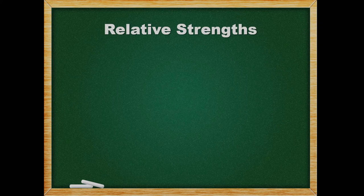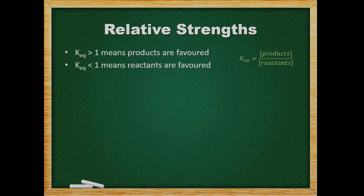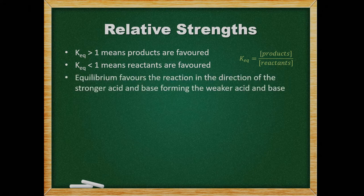The relative strengths of Bronsted-Lowry acids and bases determines the position of the equilibrium. An equilibrium constant greater than one means the products are favored, while an equilibrium constant less than one means the reactants are favored. The equilibrium position is determined by the strongest acid and strongest base reacting. We use the Ka table to determine which is the strongest acid, and the equilibrium will favor the direction of the stronger acid and base forming the weaker acid and base. Essentially, we can think of this as the stronger acid and base pushing away.